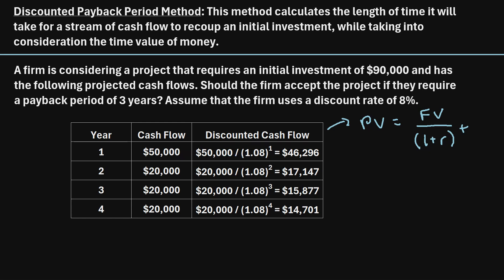For this $50,000 one year from now, we say $50,000 divided by 1 plus R. R in this case is 8%, or 0.08 as a decimal, so that would be 1.08 raised to the power of T. T is just 1 — it's one year from now. Punching that into a calculator, $50,000 divided by 1.08, you get $46,296. That's the present value of this $50,000 in cash flow one year from now.